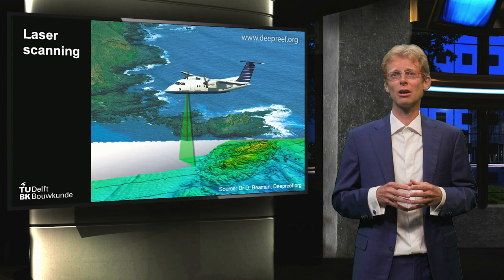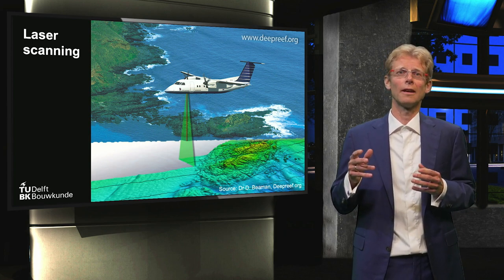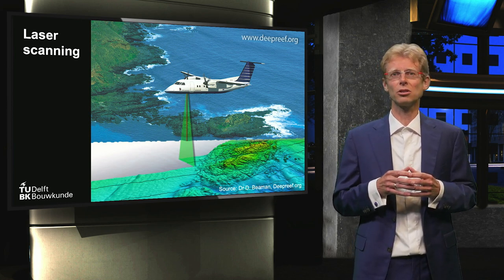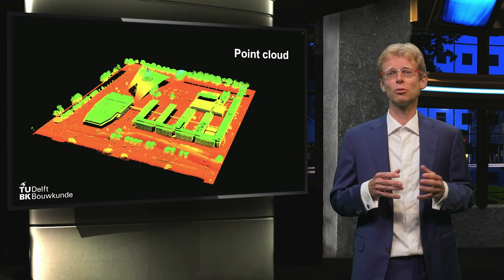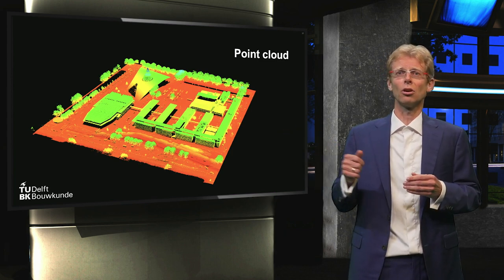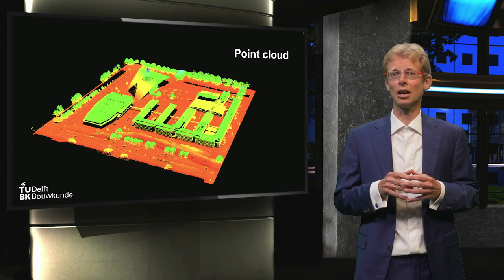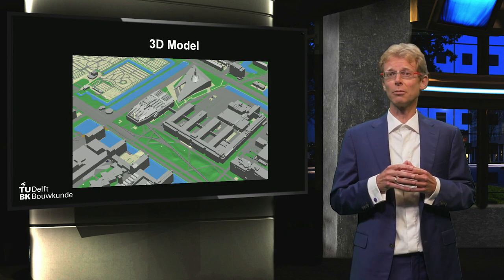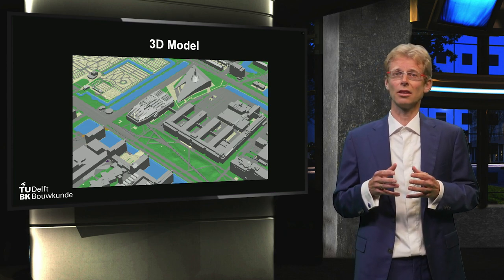Another technology essential to our profession is laser scanning. A laser beam is sent to earth, and by taking the time difference between sending and receiving the laser beam, you can measure the distance between the plane and the earth. This allows you to capture the shape of objects, buildings, and landscapes. This slide shows an example of the Dutch digital elevation model that clearly shows the buildings of the library of Delft University of Technology. With the point cloud of the library, you can create a 3D model that allows you to perform spatial analysis in 3D.